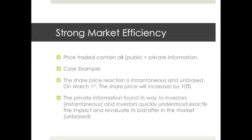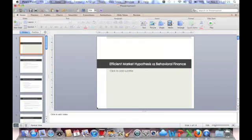In strong market efficiency — which is more theoretical — the price traded contains all public and private information. Looking back at the case example, the share price would react on March 1st, even though it is still private information and the company has not announced anything. The share price increases by 10 percent. In a strongly efficient market, private information somehow finds its way to investors instantaneously, investors re-evaluate the impact, and adjust their bids and offers — no longer selling at $10 but increasing the price by 10 percent. That is the difference between weak, semi-strong, and strong market efficiency.